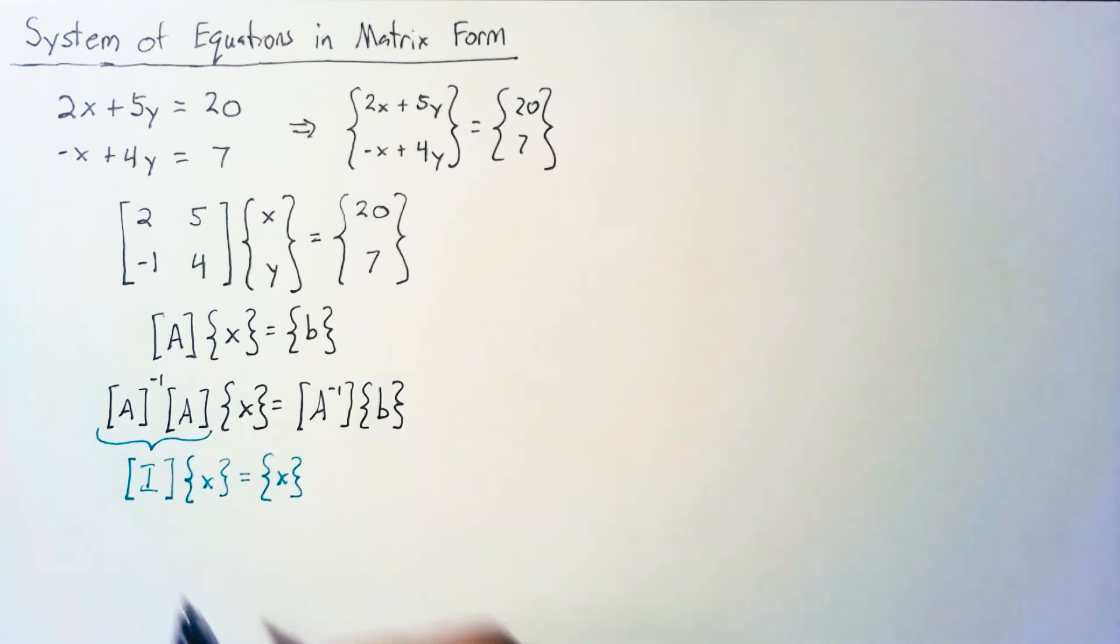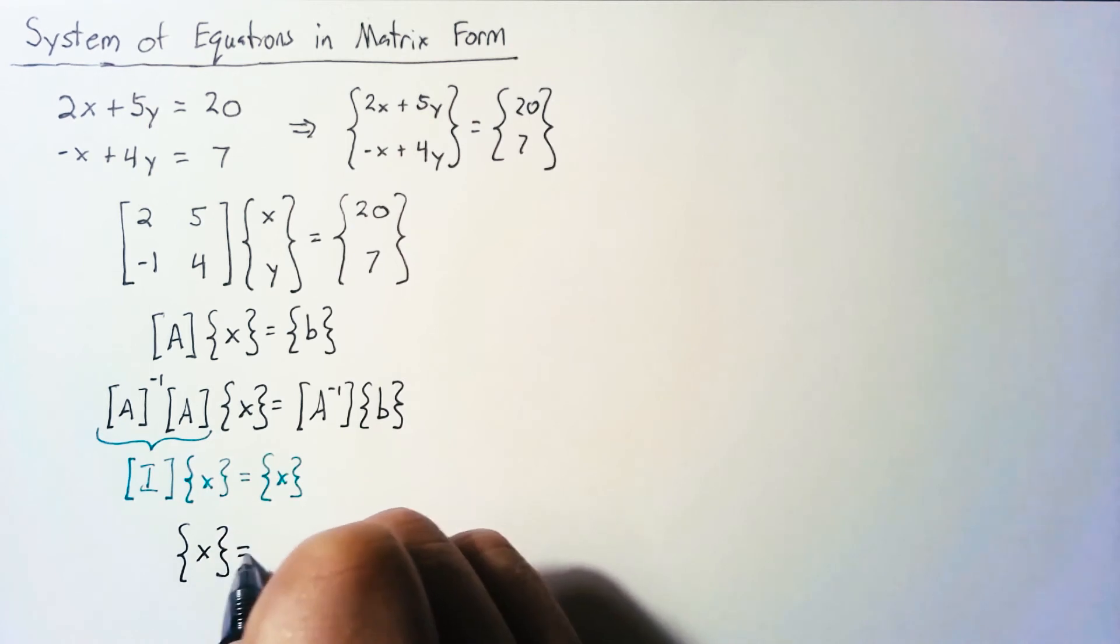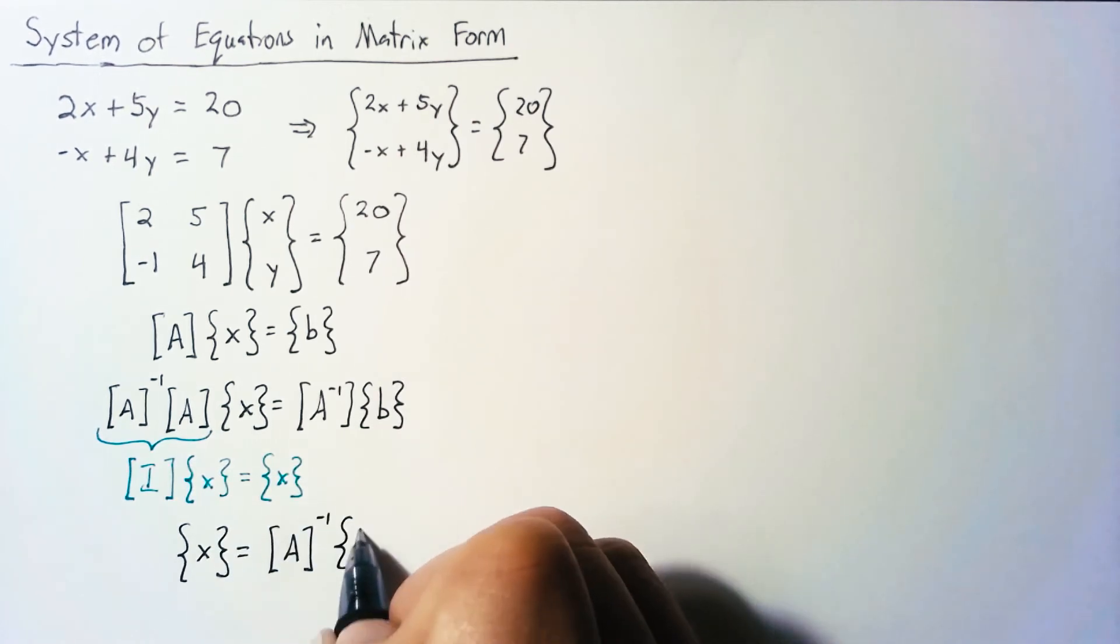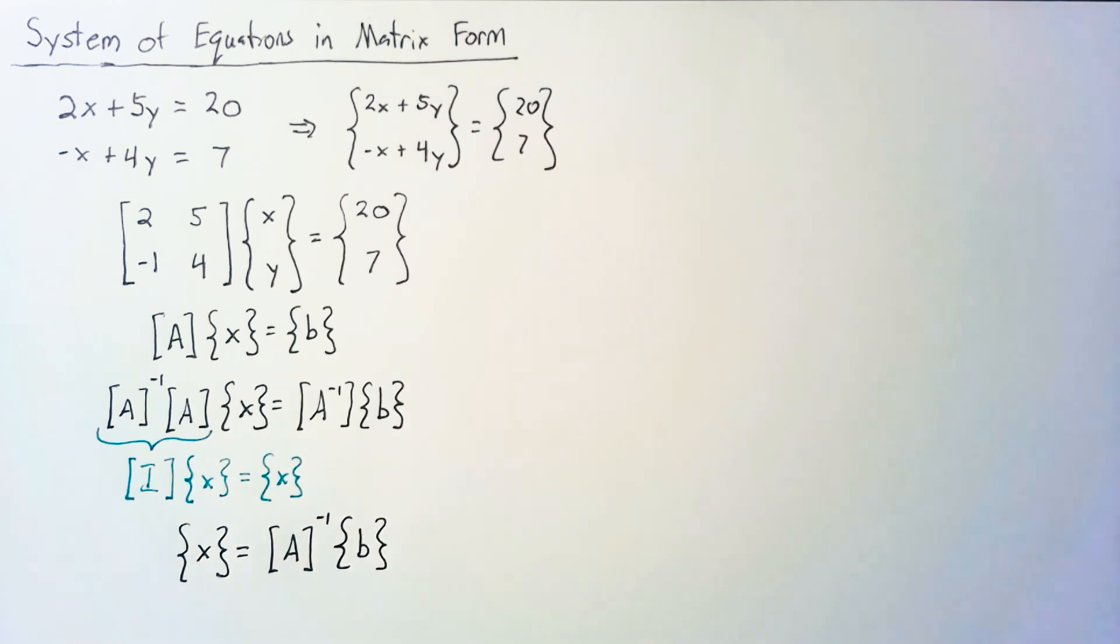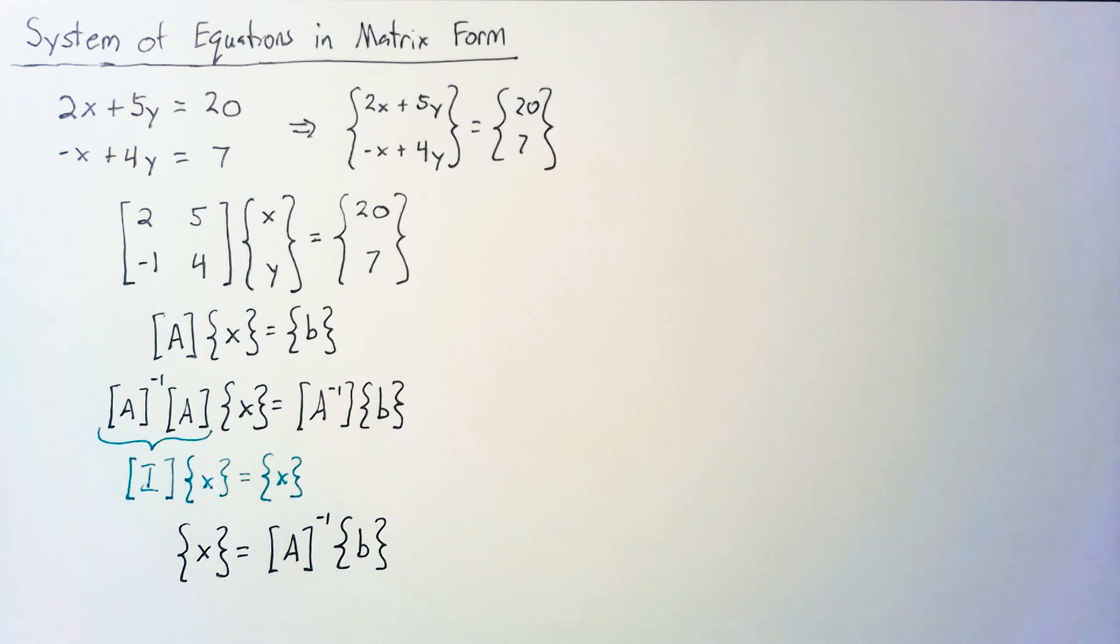So the equation that we end up with is our vector of unknowns x is going to be equal to the inverse of A multiplied by B. So how does that relate to our system of equations up above?